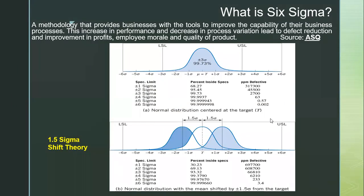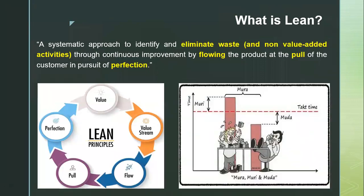Lean is basically about reducing or eliminating non-value-added activities through continuously improving the flow of the process — the flow of the product or flow unit — pulled by customer demand, not pushed. We produce according to the requirements of the customer and strive for perfection: producing whatever the customer needs to their specification.